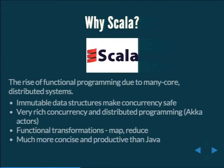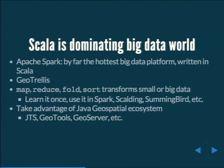You see more people moving toward functional transforms — MapReduce and Hadoop are based on this idea: start with one set of values, transform it, and produce a new set. When you produce a new copy instead of mutating, whoever relies on the old copy isn't affected. This maps very well to the multi-core and distributed world. We find Scala far more concise and productive than Java.